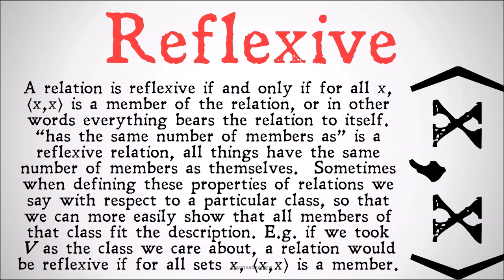Sometimes when defining these properties of relations, we define them with respect to a particular class so that we can more easily show that all members of that class fit the description. For example, if we took V as the class we care about, a relation would be reflexive if for all sets, all members of V, xx is a member.